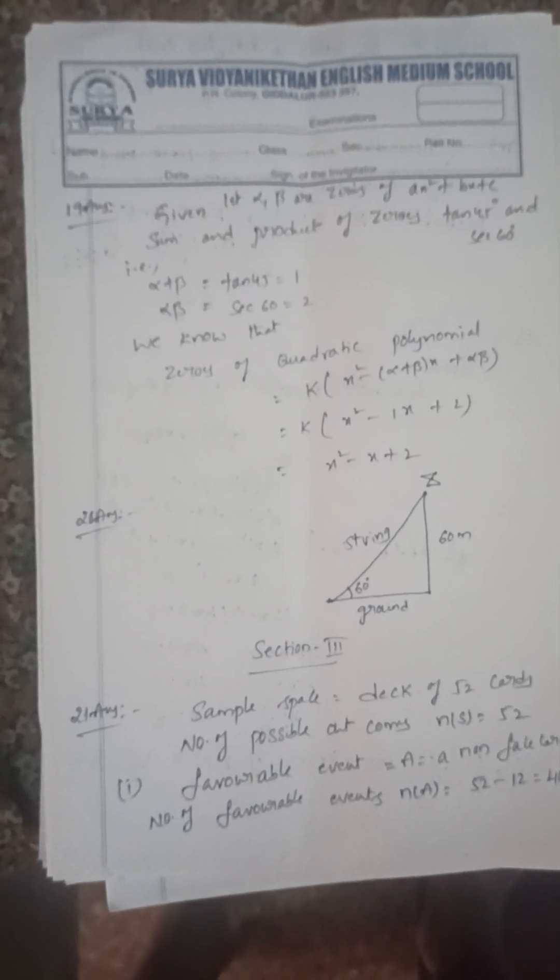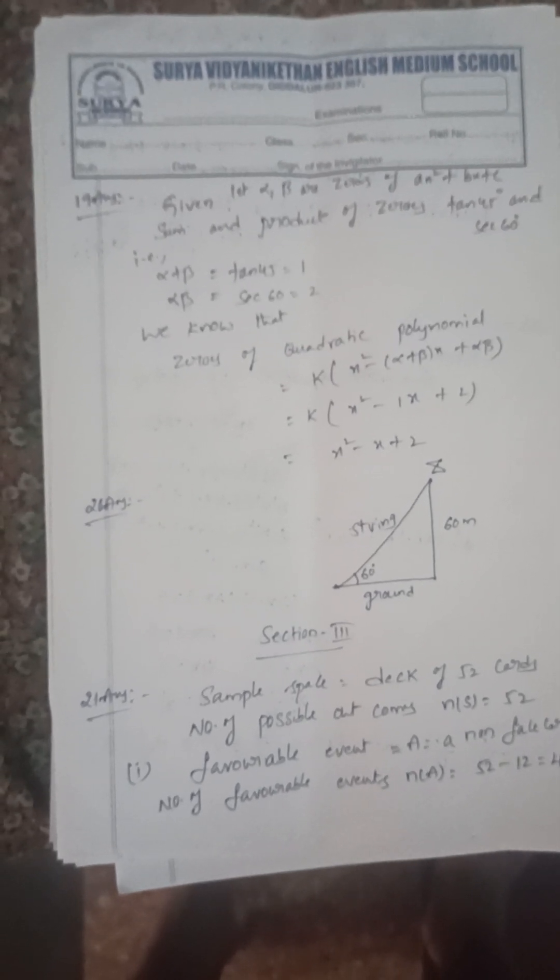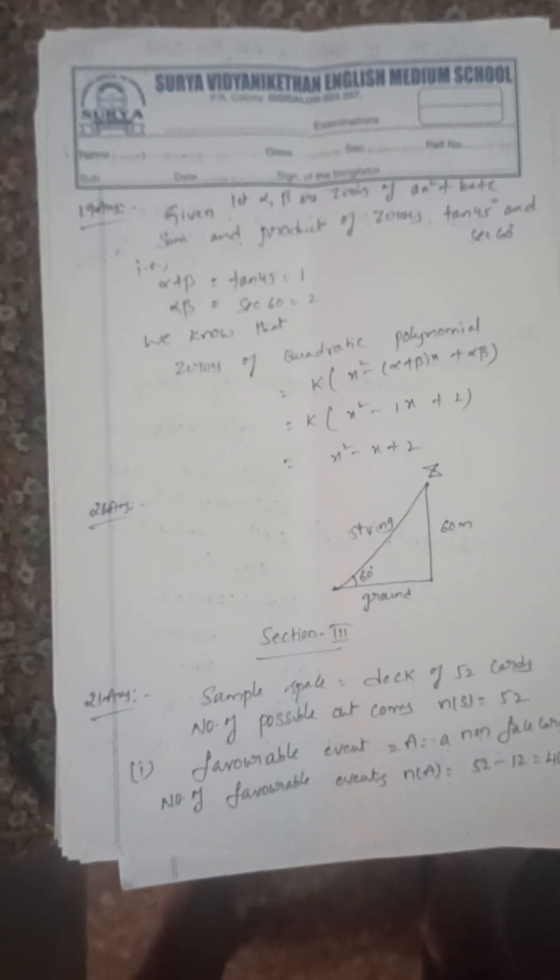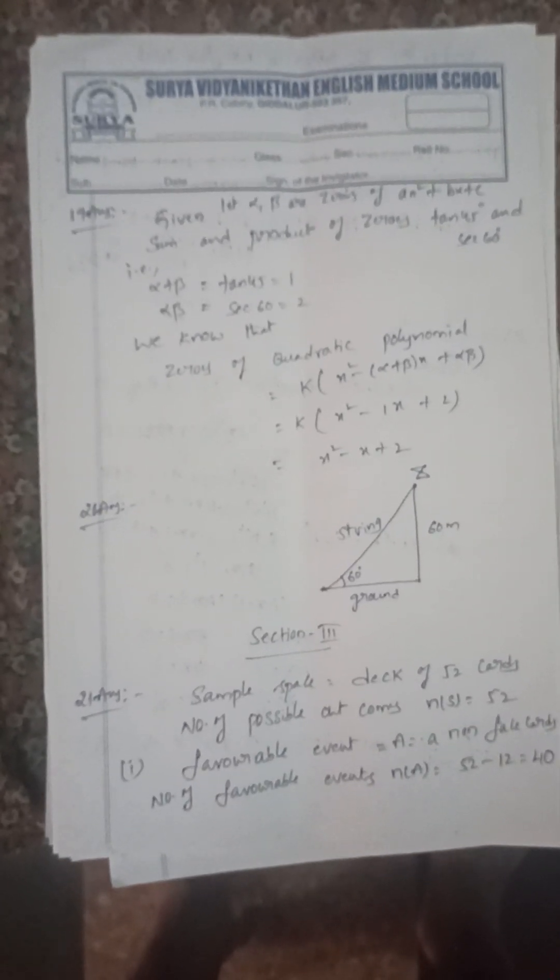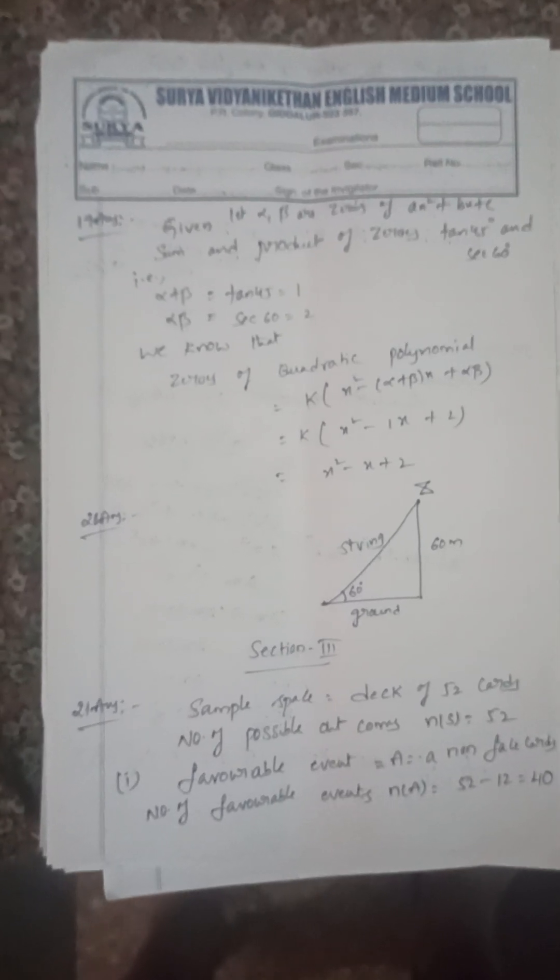Next, a kite is flying with length L. The angle of elevation from the ground is 60°. Height of the kite is 60 meters.